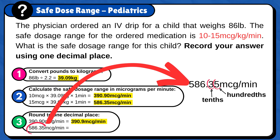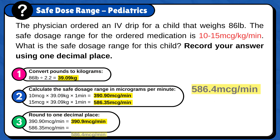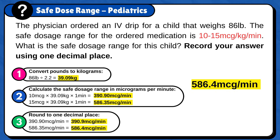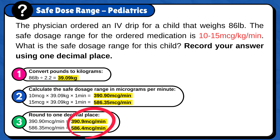In this case, since the hundredths digit is a number between 5 and 9, you would round up the number in the tenths place. And the answer is 586.4 micrograms per minute. So the safe dosage range is between 390.9 micrograms per minute to 586.4 micrograms per minute. Therefore, any medication dosage given in this range is safe.